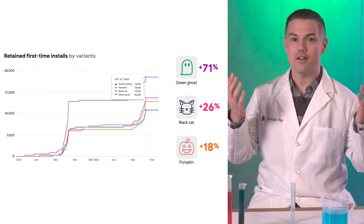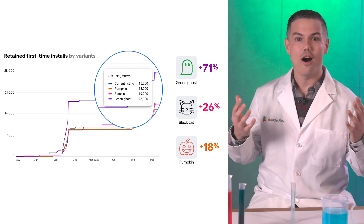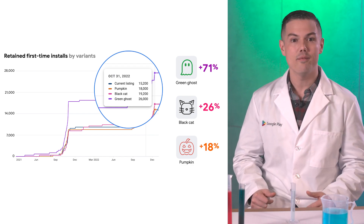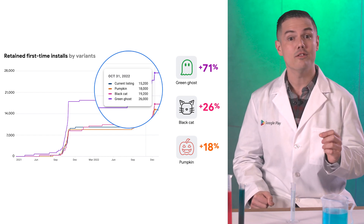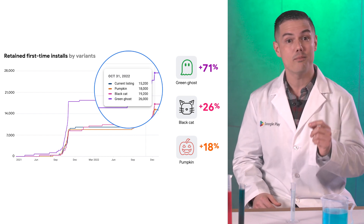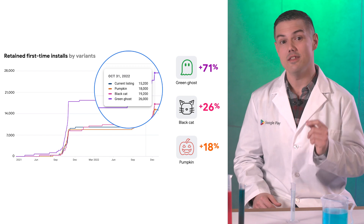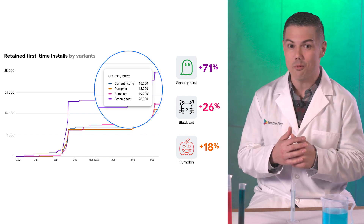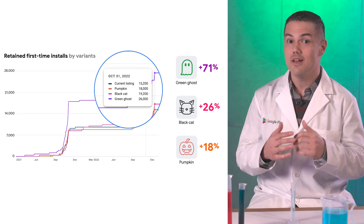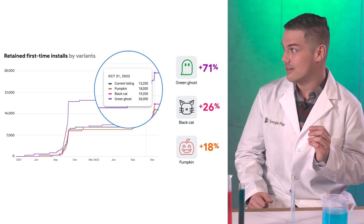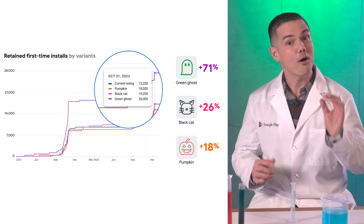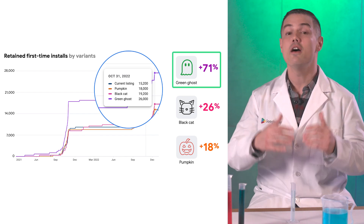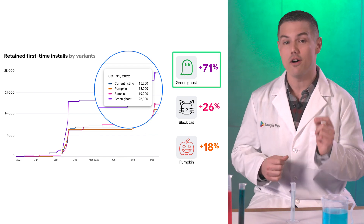Wow, Diana proved me wrong. Our green ghost icon really took off. Our retained first time installs performed 71 percentage points higher than the default store listing. Our current store listing was actually the worst. Now that's a scary statistic. Our business decision would be to adopt our green icon variant for our default store listing.